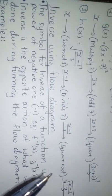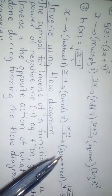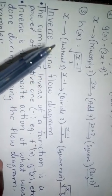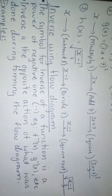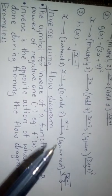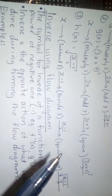All the actions done when drawing the flow diagram are reversed when finding the inverse. For example, in h(x) we had: subtract 1, divide by 3, then square root. When finding inverse, we start with the last action — square root — and do the opposite: square. The next action was divide by 3, so on the inverse we multiply by 3. The final part, which was initially subtract 1, becomes add 1 on the inverse. So we do the opposite action in reverse order.